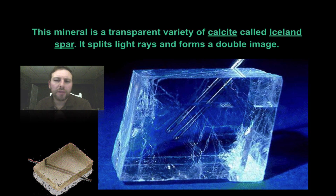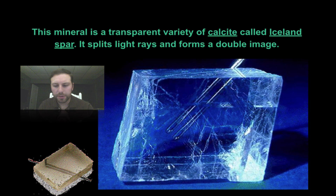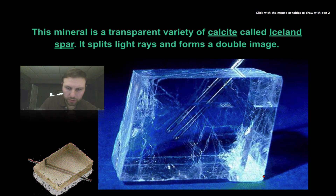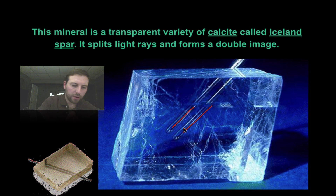Some minerals have other identifying features. Iceland spar, for example, creates a double image. When you hold a pin behind it, you see the pin twice. This is caused by the way light rays travel through the iceland spar.